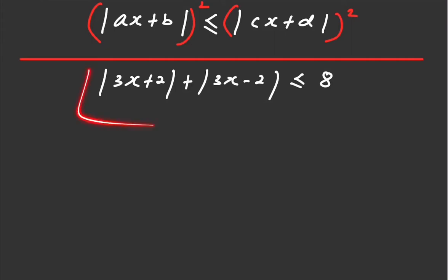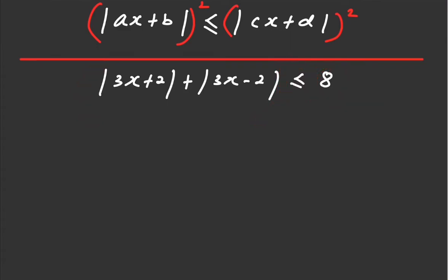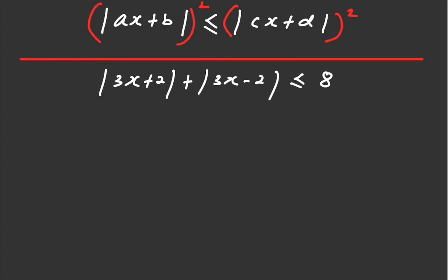We can have a look at this example. You can choose to expand it by putting a square on the left and right hand side. However, look at this specific example — we have two moduli on the left hand side of the inequality. If you were going to expand it on the left, it's very hard to do so. The best way is to make sure there's only one modulus on each side of the inequality.